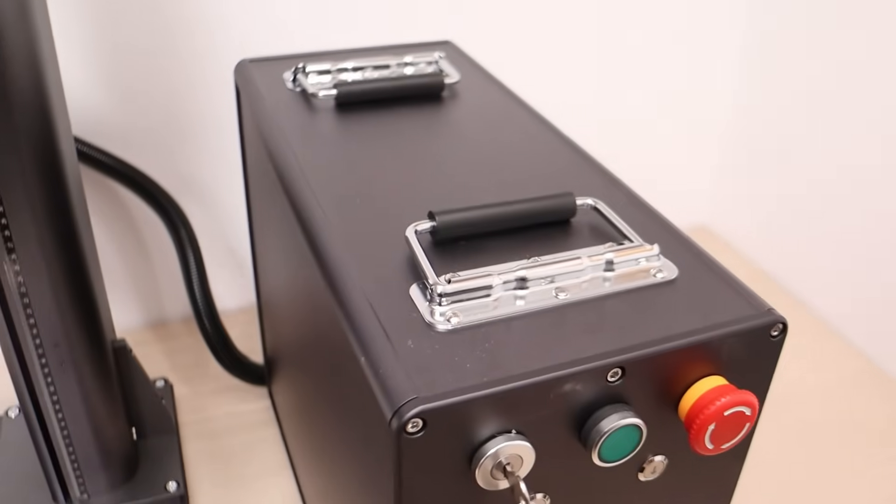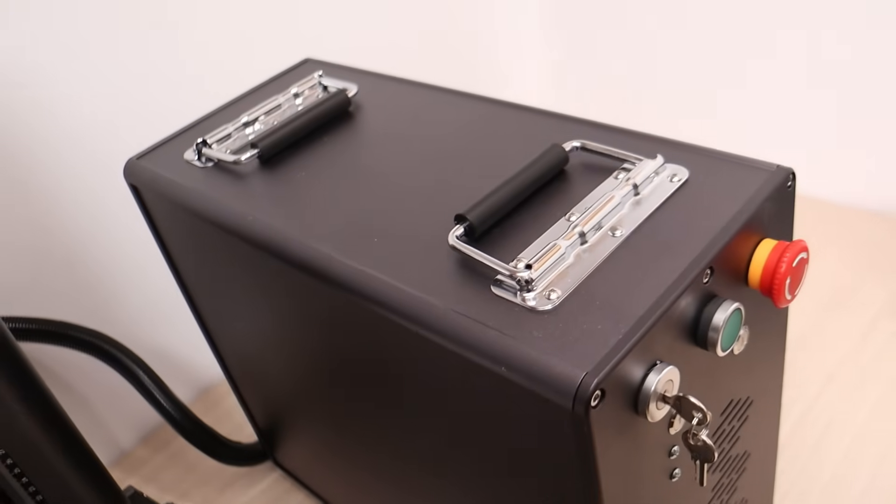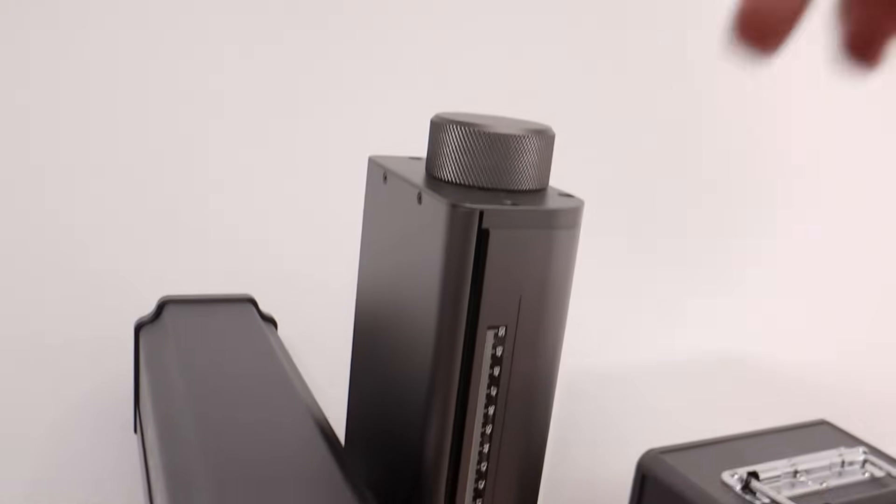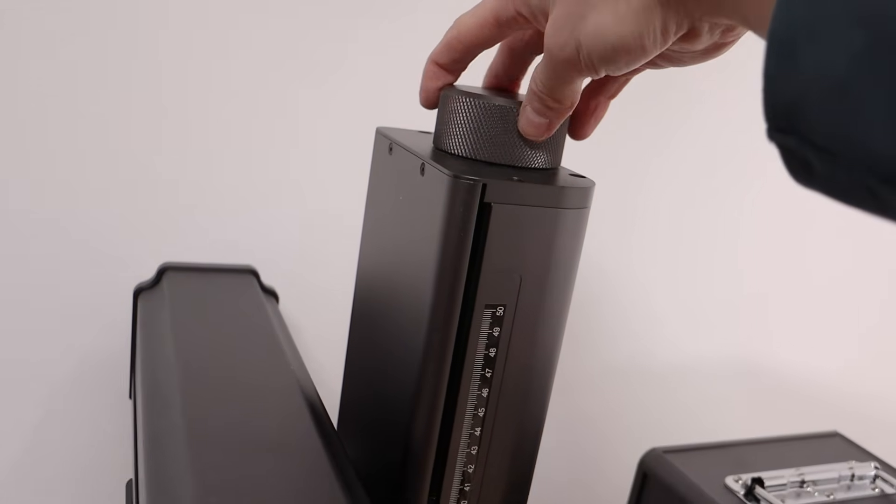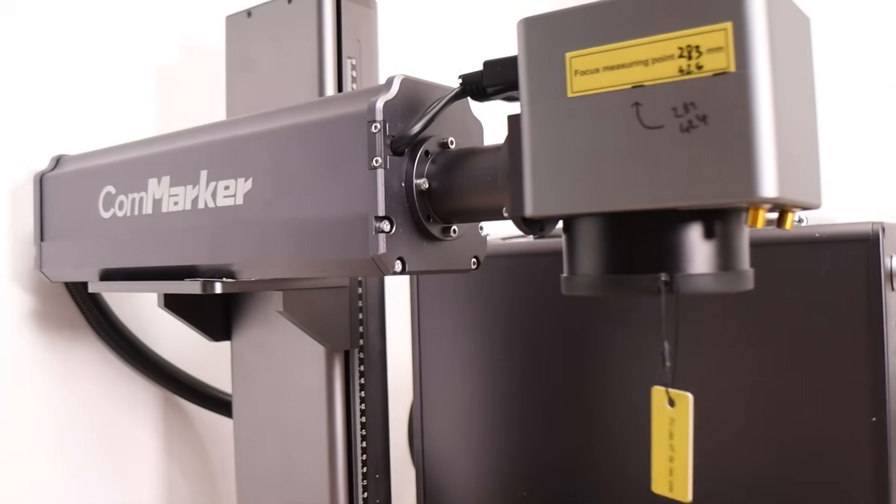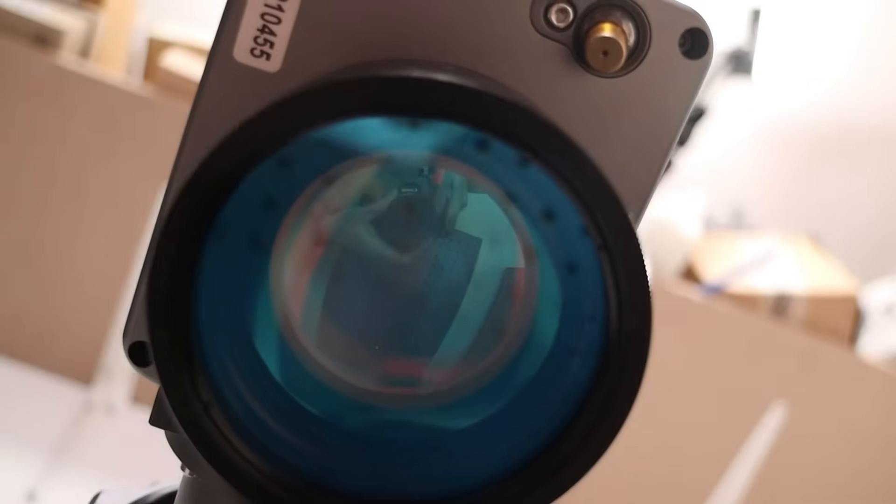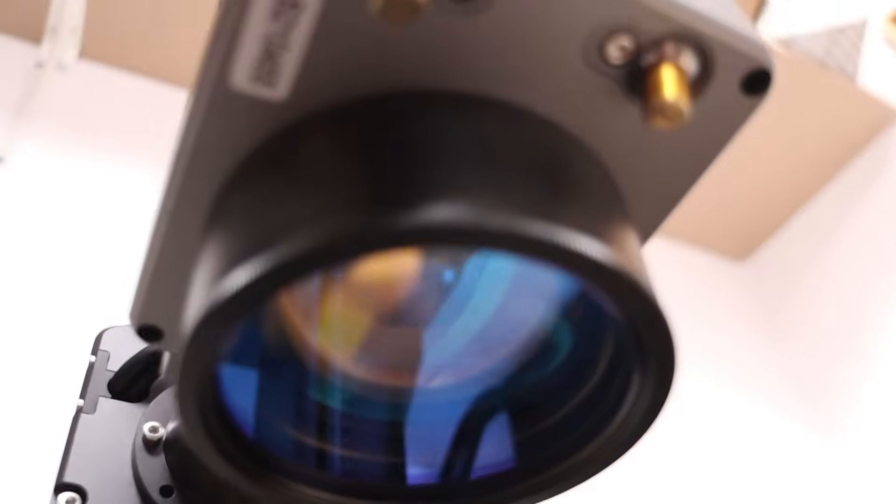On top of the unit, there are two sturdy handles for easy transport. Additionally, you can manually adjust the focus using a large knob located on top of the tower. The CommMarker Titan can be focused using the included ruler or the two laser pointers mounted underneath the galvo head.